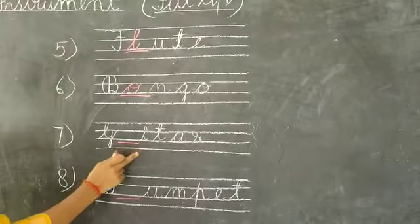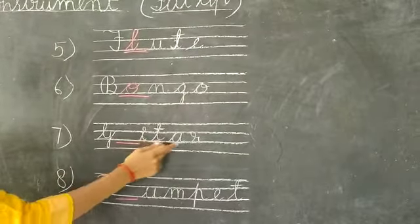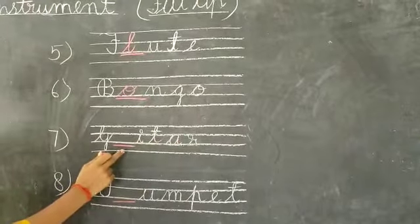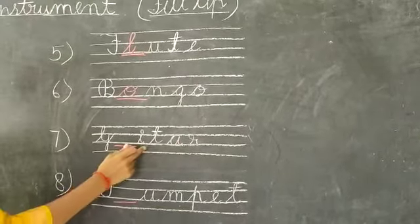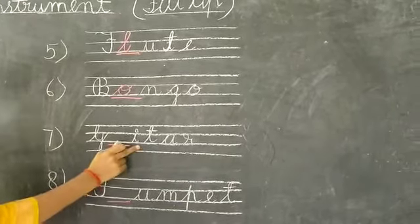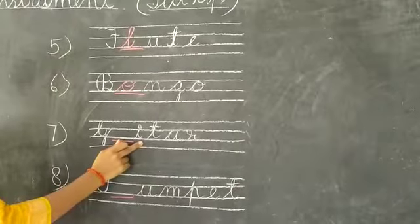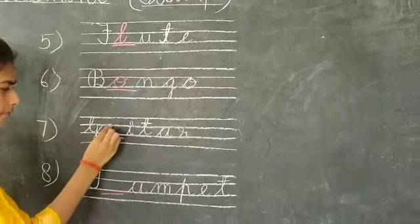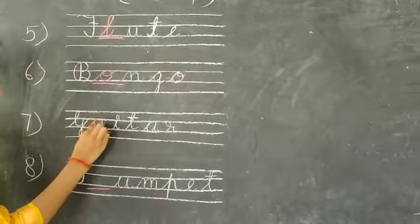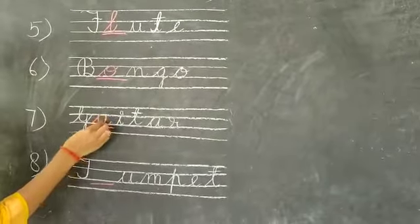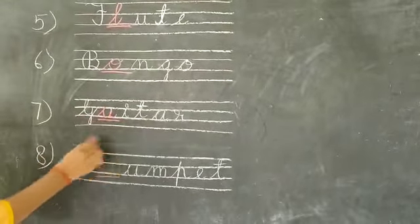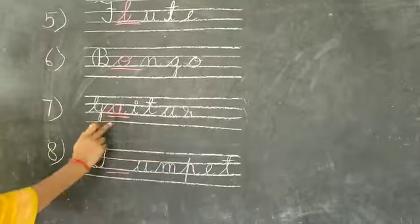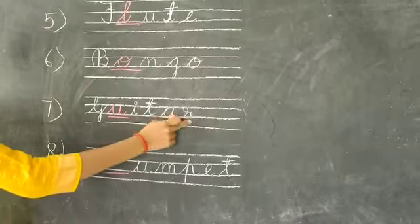Number seven: G-dash-I-T-A-R. Now student, tell me what will we come between G and I? Yes, right — U. Guitar. G-U-I-T-A-R. Guitar. G-U-I-T-A-R. Guitar.